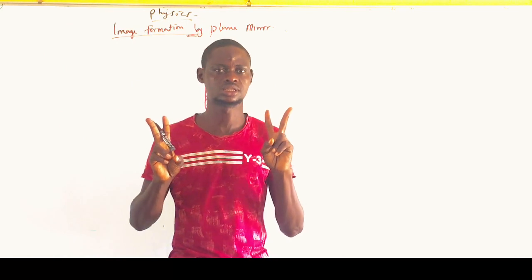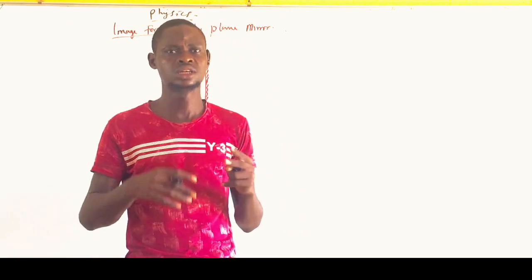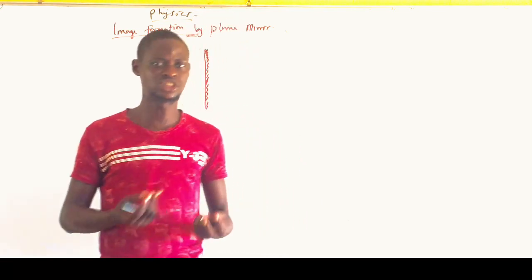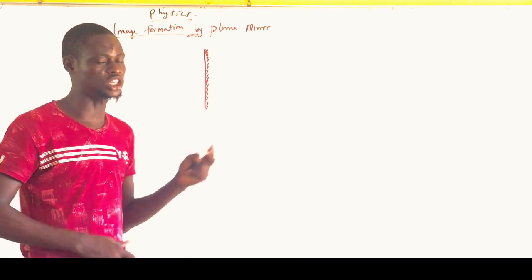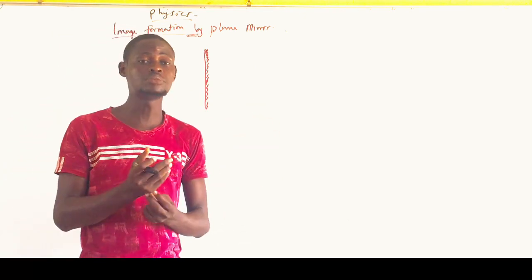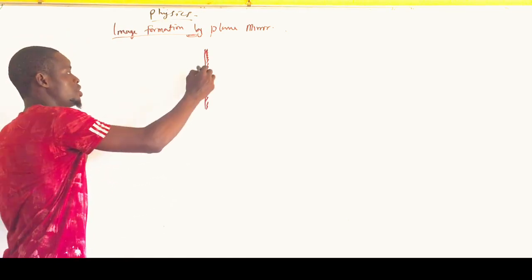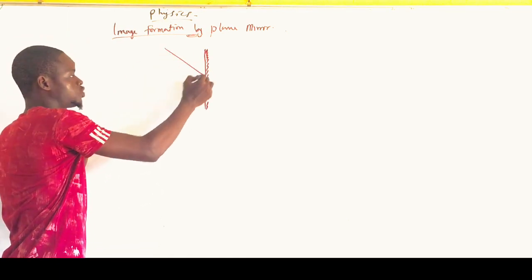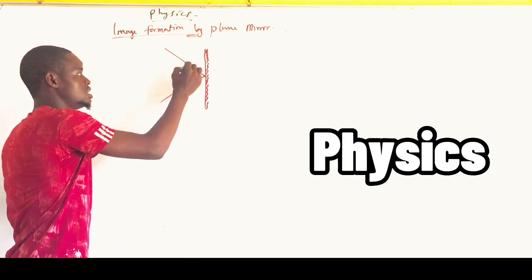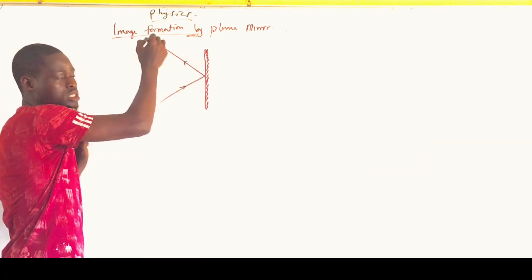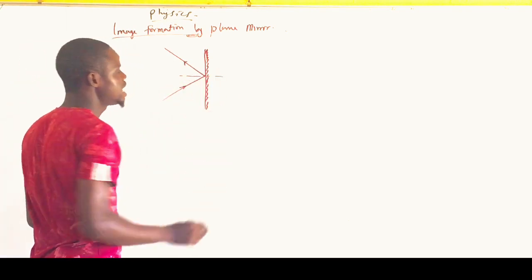I will give you two questions which I noticed are repeated in JAMB exams. Most questions are found under reflection, specifically under image formation by a plane mirror. In a plane mirror, the angle coming directly from the source is the angle of incidence, the angle leaving the surface is the angle of reflection, and the line perpendicular to the surface is the normal.